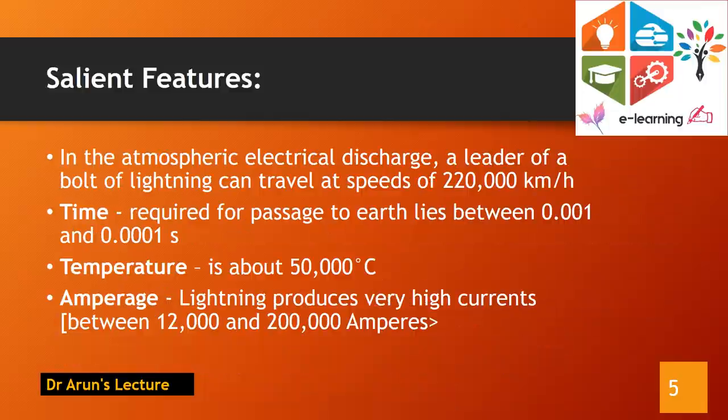These are the salient features about lightning. In atmospheric electric discharge, a leader of a bolt of lightning can travel at a speed of 220,000 km per hour. The time required to pass through air lies in microseconds. In temperature, it is about 50,000 degrees Celsius. Based on ampere, lightning produces the highest amount of current, lying between 12,000 to 20,000 amperes.